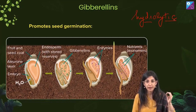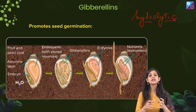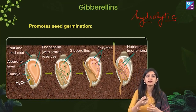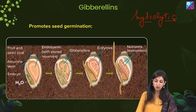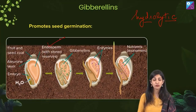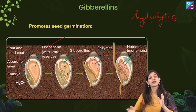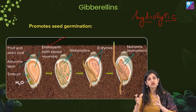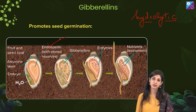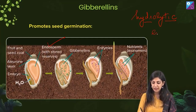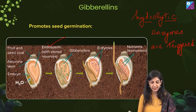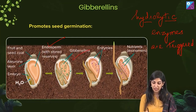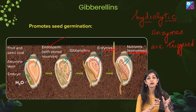Hydrolytic enzymes like amylases and lipases break down the complex nutrients present in the endosperm — the nutritive tissue — including carbohydrates and fats. These nutrients are then used to provide energy for the seed to germinate. The endosperm already has food reserves; we need something to break them down into usable simple nutrients. Hydrolytic enzymes are triggered by gibberellins, changing food reserves from polymers to monomers for germination.